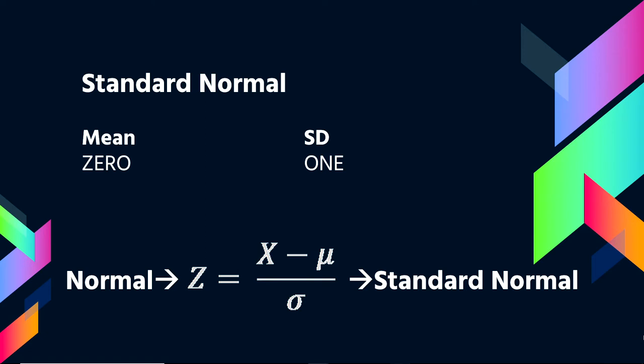And we can take any normal distribution and convert it into what we call a standard normal distribution. And a standard normal distribution simply takes the raw information, the raw scores, which we annotate as x, and it converts them into what we call z-scores, or standardized scores.